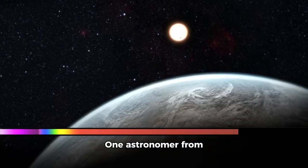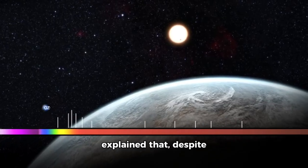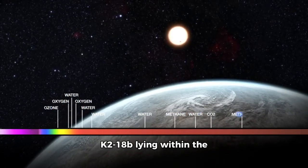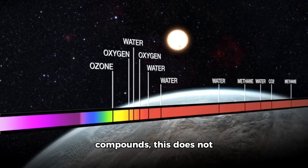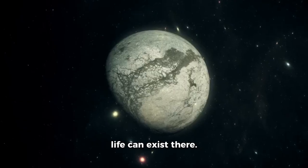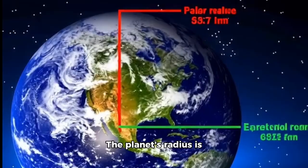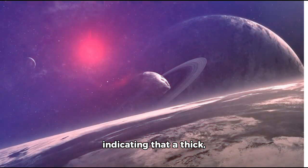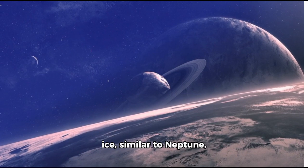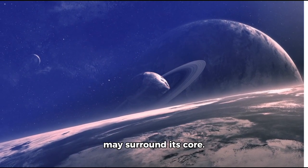One astronomer from Cambridge University explained that despite K218b lying within the habitable zone and consisting of carbon compounds, this does not automatically imply that life can exist there. The planet's radius is 2.6 times Earth's, indicating that a thick, high-pressure mantle of ice similar to Neptune may surround its core.